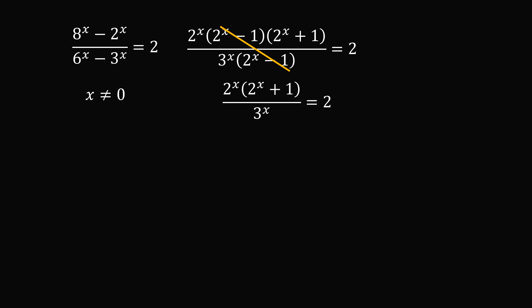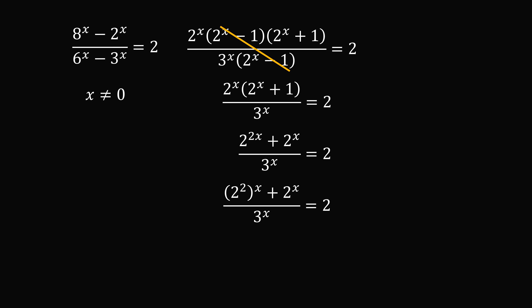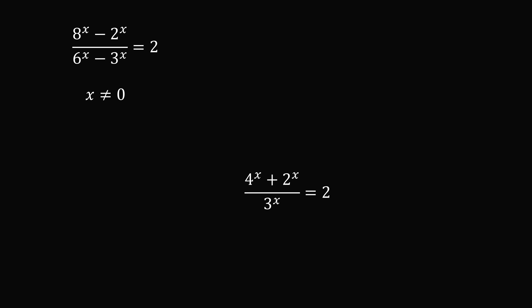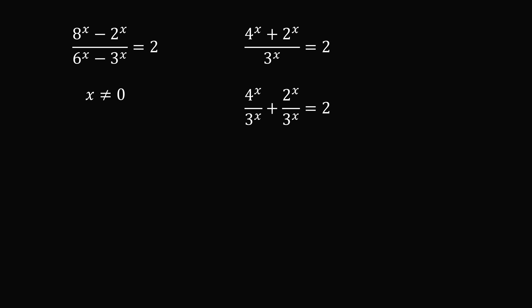We distribute through in the numerator. Then 2 to the power of 2x can be rewritten as 2 squared to the power of x, which equals 4 to the power of x. From here, we divide through by 3 to the power of x, giving 4 to the x divided by 3 to the x plus 2 to the x divided by 3 to the x, all equal to 2. We rewrite this as 4 over 3 raised to the power of x plus 2 over 3 raised to the power of x equals 2.